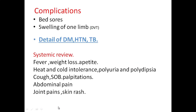Ask about joint pains, rash, oral and genital ulcers, because vasculitis can cause paraplegia. Family history is important. Then ask about complications of the disease: bed sores, swelling of one limb which could be due to DVT, or development of cough or fever after this weakness.